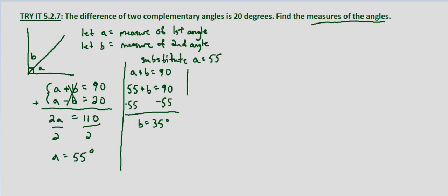Let's go ahead and use the other equation just to make sure that it works. So A minus B equals 20. 55 minus B equals 20. Subtract 55 from both sides. We get negative B equals negative 35. Then divide both sides by negative 1 and we get B equals 35 degrees.